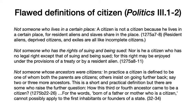Aristotle first considers some flawed definitions of the polites or citizen in chapters one and two. So a citizen isn't merely someone who lives in a certain place, for resident aliens and slaves live in the same place but they aren't citizens. According to Aristotle, resident aliens, deprived citizens, and exiles are all like incomplete citizens — they're not full citizens. And of course, we don't consider them full citizens either.